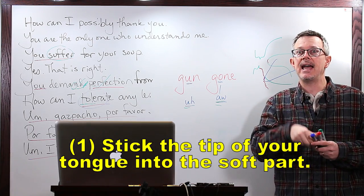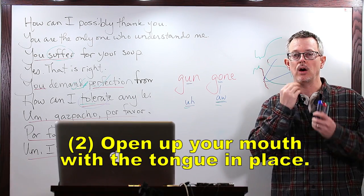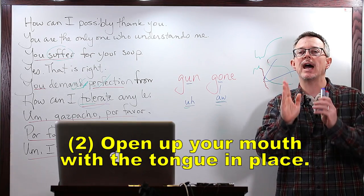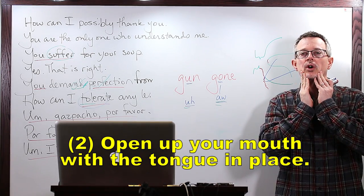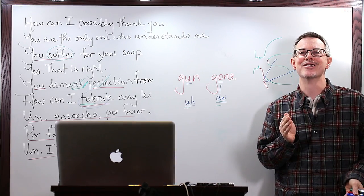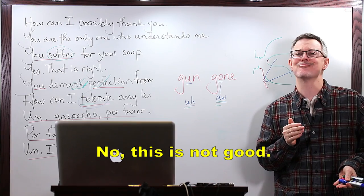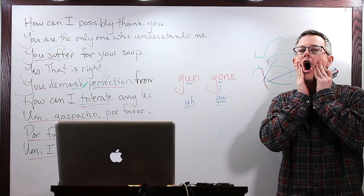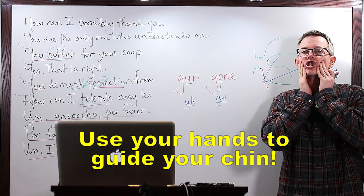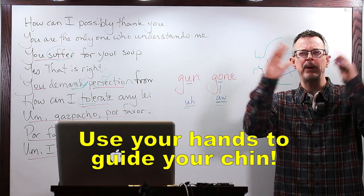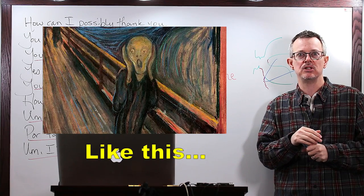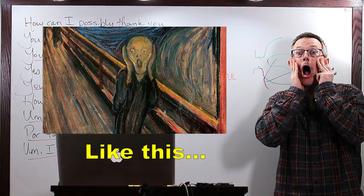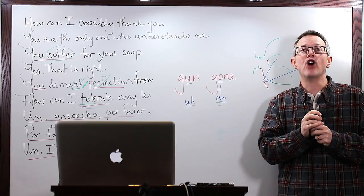So when you do the aw sound, the easy way to do it is to stick the tip of your tongue into the soft part and open up your mouth. But you have to keep your mouth vertical, not round. Gone, gone. No, that's not right, that's wrong. Gone, gone. Just like the painting Scream. Do you know that painting? That's what the Scream painting is about.